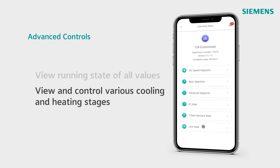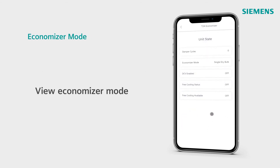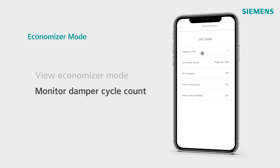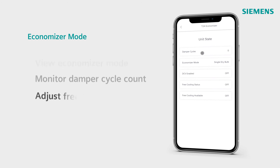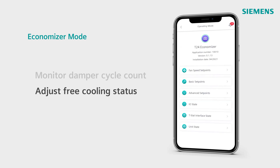Finally, in the unit state, you can view which economizer mode you're operating under, the damper cycle count, as well as your free cooling status and whether it's available. This is another way to maximize T24 compliance, ensuring your dampers do not exceed 100,000 cycles.